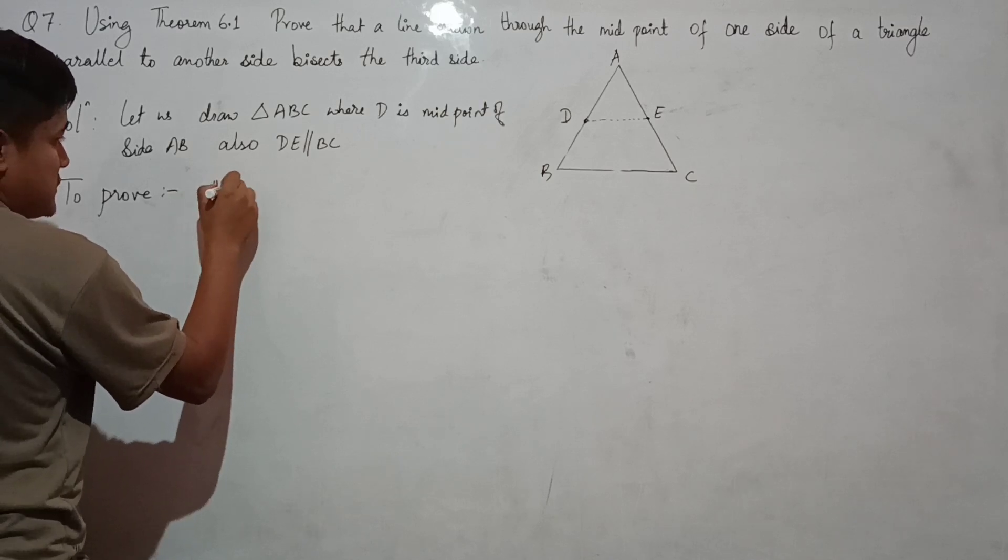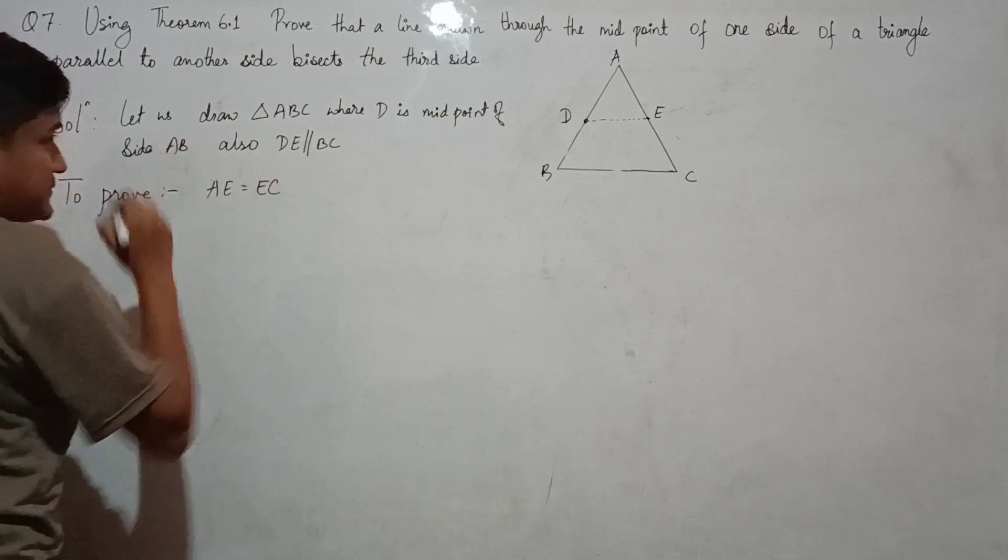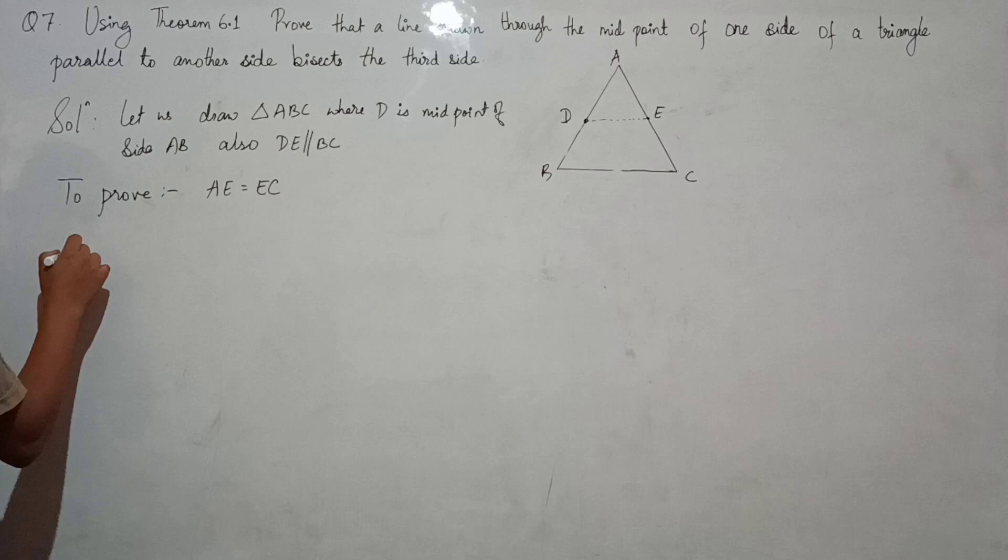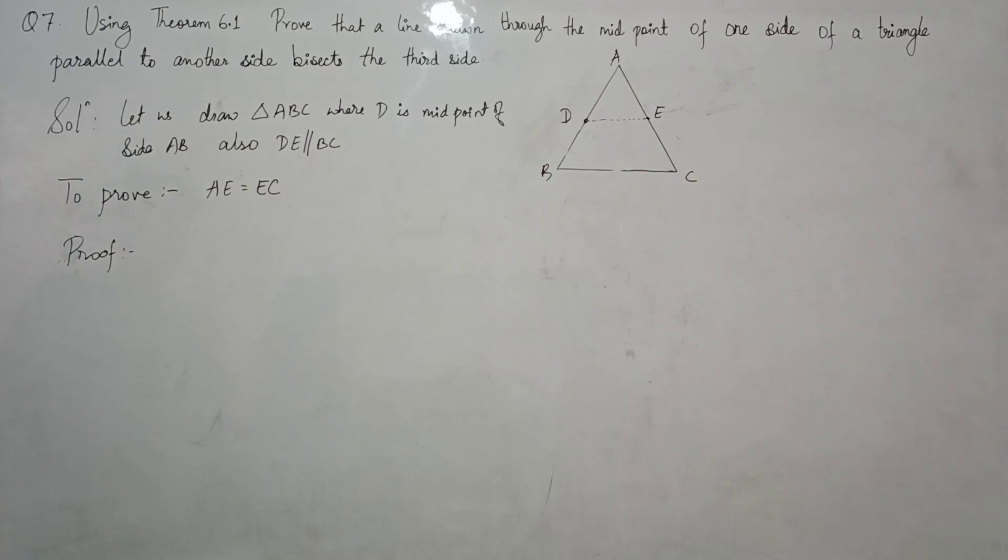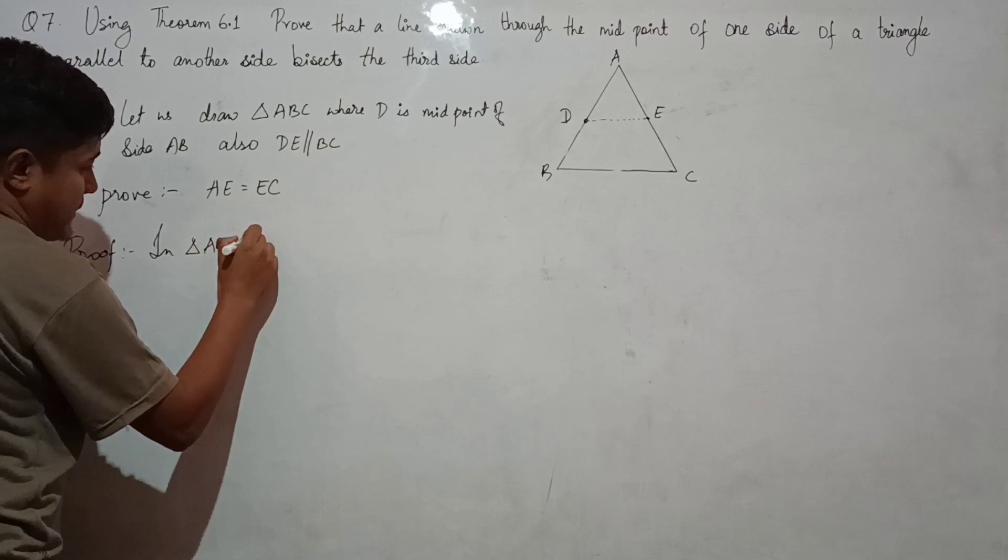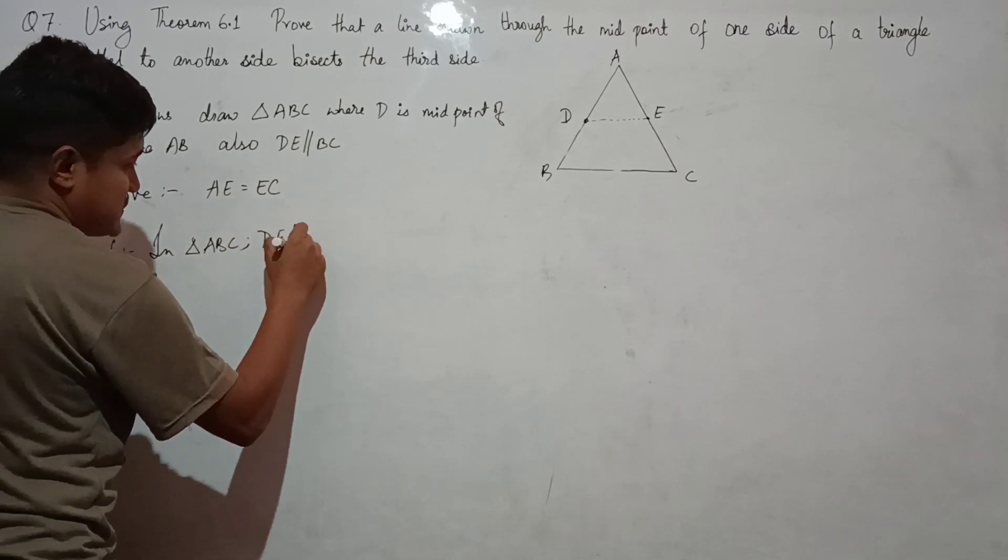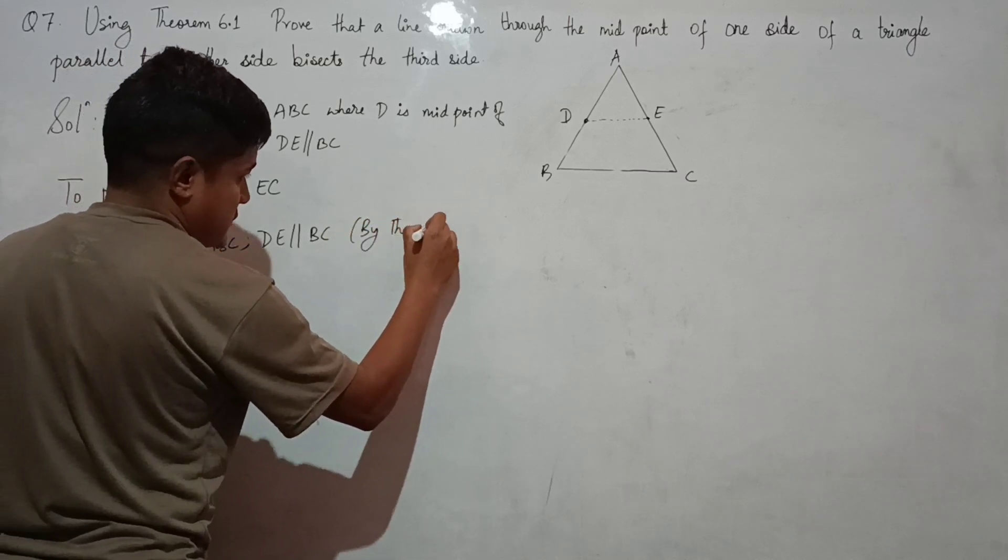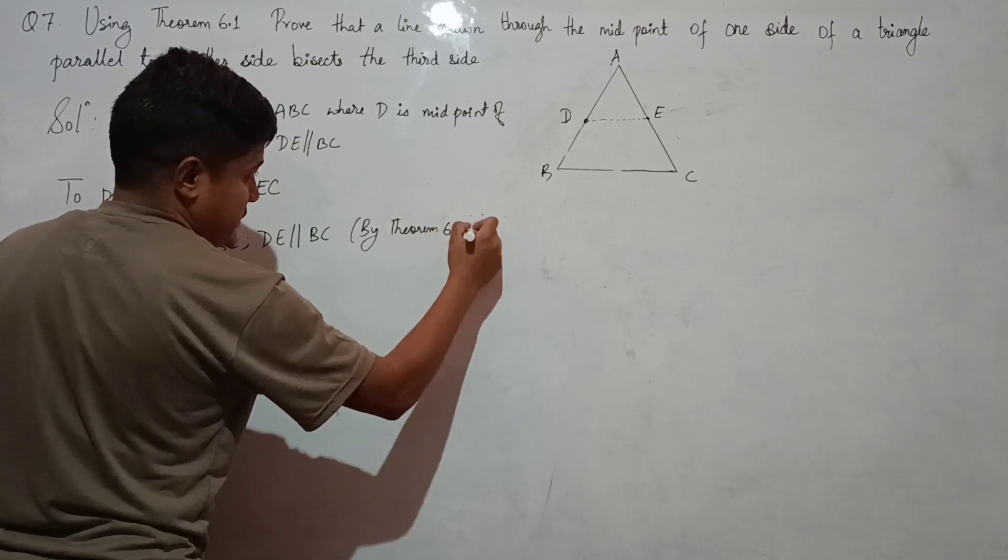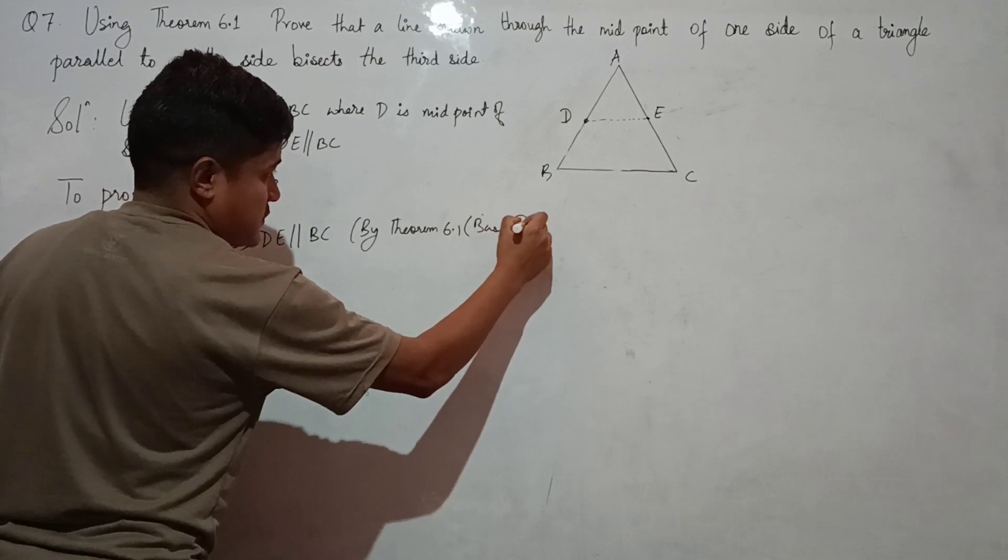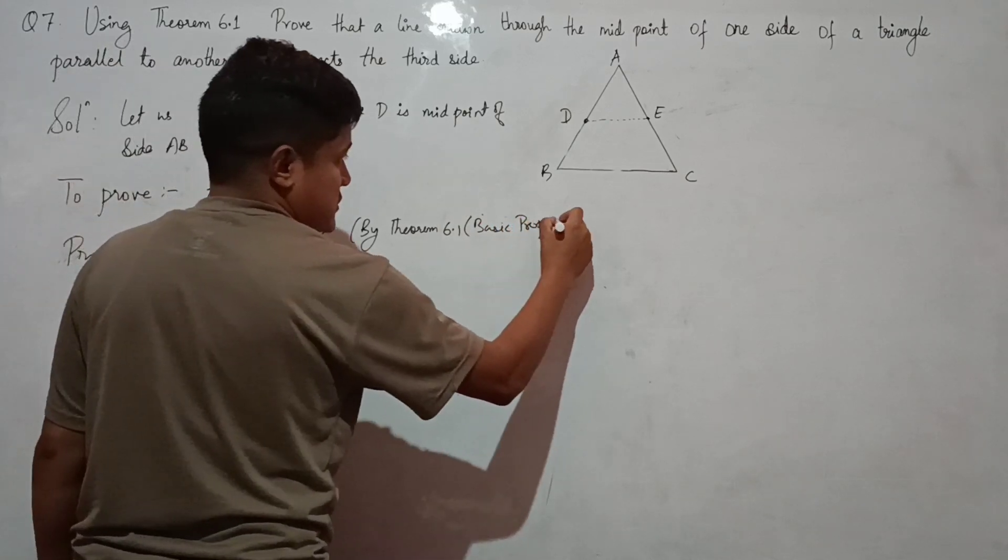To prove: AE equals to EC. Proof: Since in triangle ABC, DE is parallel to BC, by Theorem 6.1.